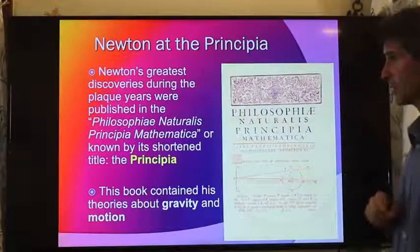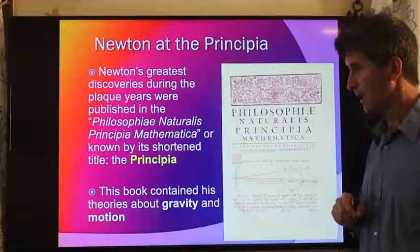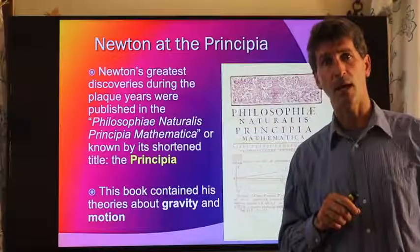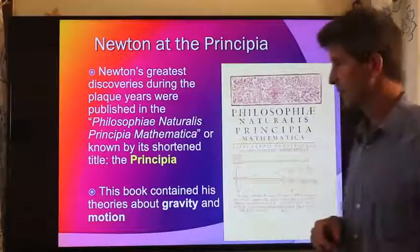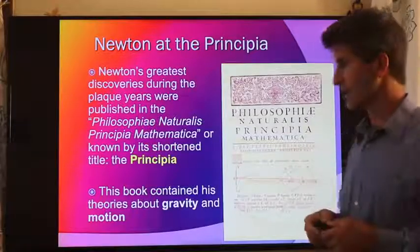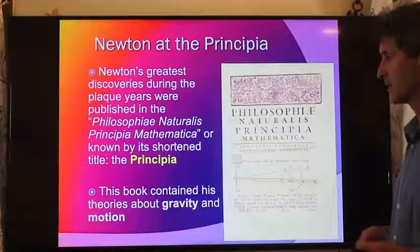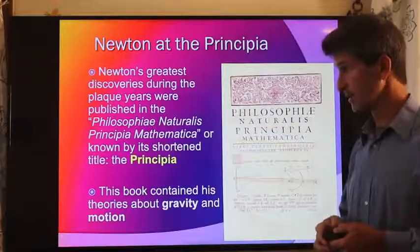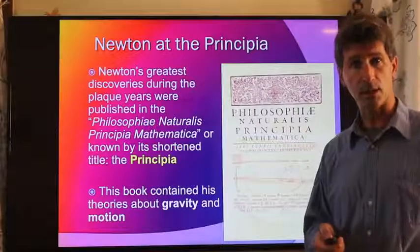He eventually published the work that he did over the plague years. He published it in a work called the Principia. And this was done, I believe, at the insistence of Edmund Haley, of course, who discovered Haley's Comet, because Haley was very impressed on what Newton had discovered. This book contained theories about gravity and motion and basically contained Newton's Three Laws, which we'll be talking about here.